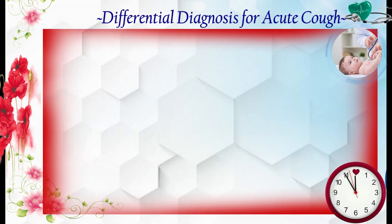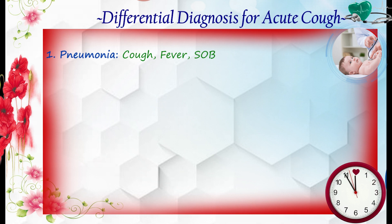Let me give you a differential diagnosis for acute cough, and you have to work out and read in detail about these disease entities so you can easily rule out each of them. A child presented with acute cough. The top differential diagnosis one is pneumonia, but we should consider all these other differentials.